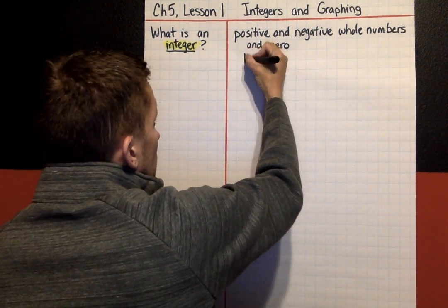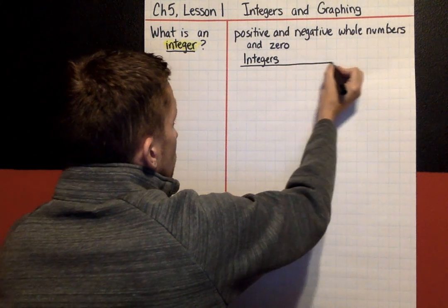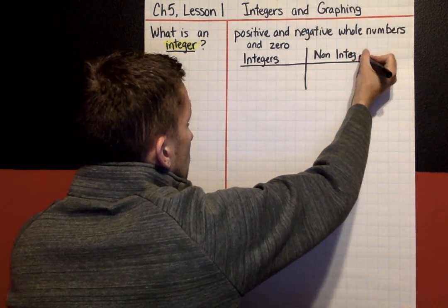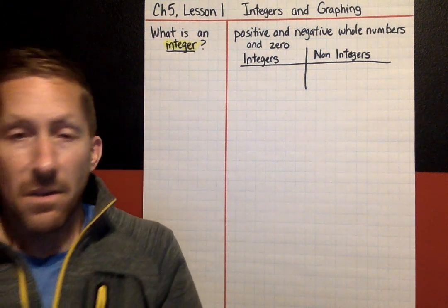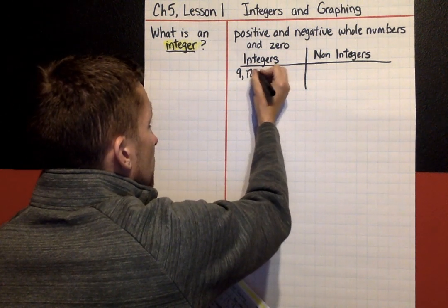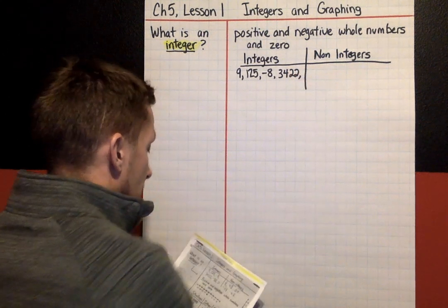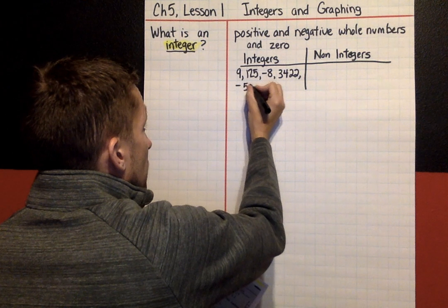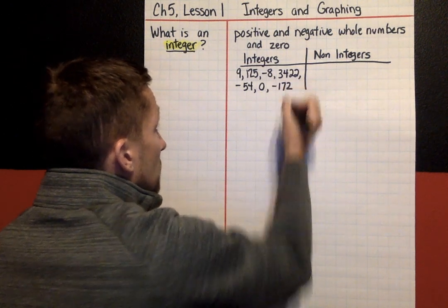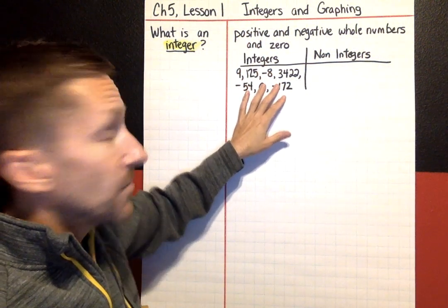I'm going to make a t-chart with some examples. On this side: integers. On this side: non-integers. Here are some examples of integers: 9, 125, -8, 3422, -54, 0, -172. I could go on and on, but it is positive and negative whole numbers and zero.